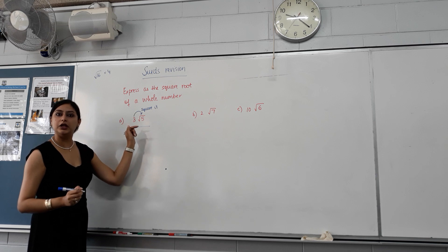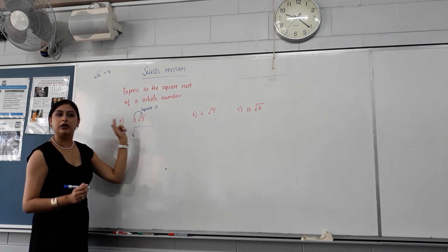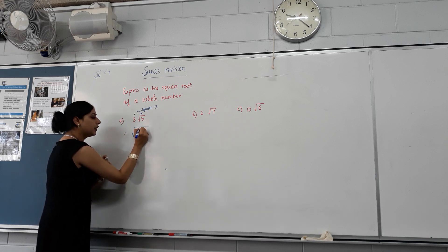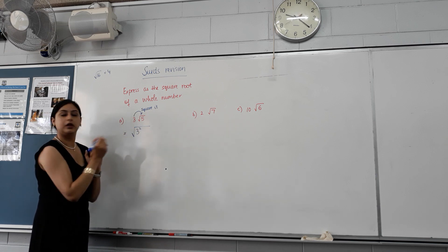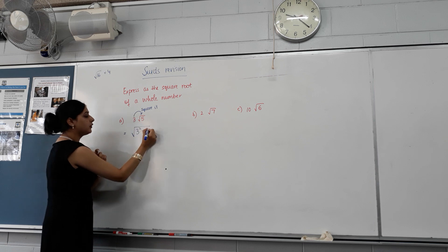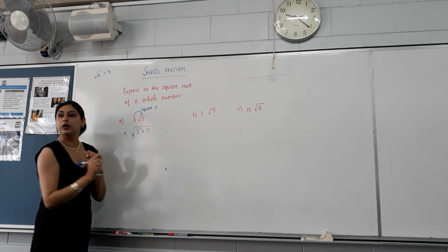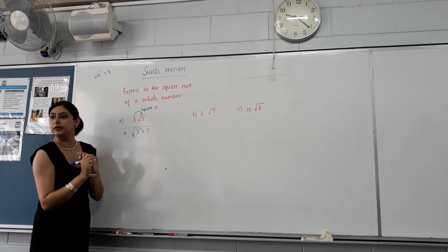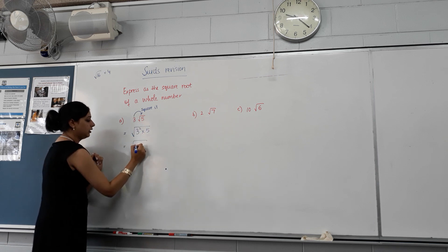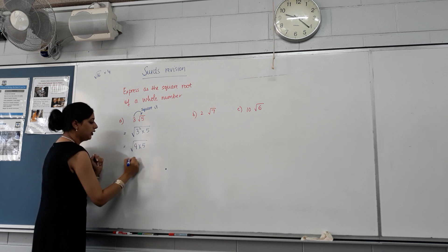So 3 — we need to take it inside. And 3 becomes 3 squared. Times? 5 is already there. What's 3 squared? 9 times 5, which is 45.